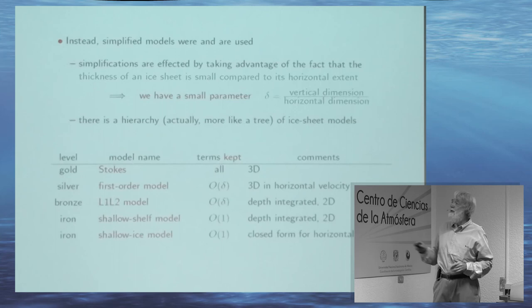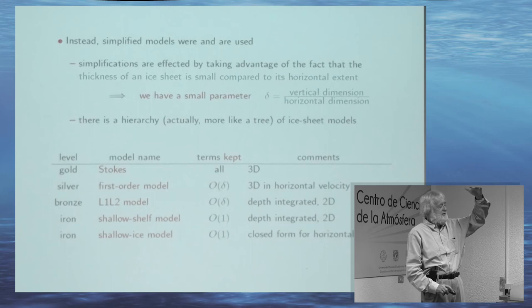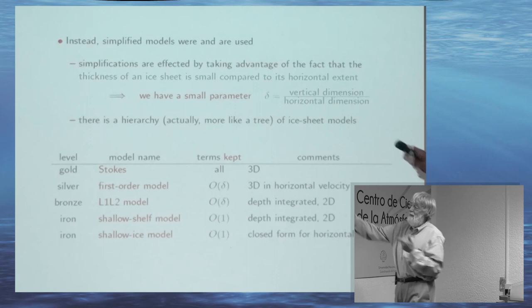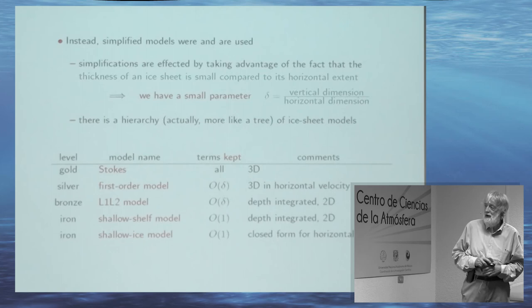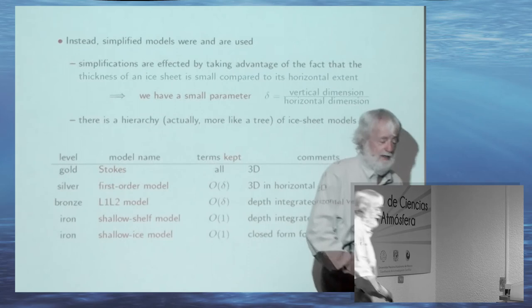The simplification is due to the fact that even though ice thickness can be several kilometers in Greenland and Antarctica, the horizontal extent of the ice sheets is thousands of kilometers. So you have a small parameter: the vertical extent divided by the horizontal extent. Once you have a small parameter, you can figure out what terms to throw out and simplify your model. The Stokes is fully 3D, but then just like airlines have a hierarchy of frequent flyer programs, we have a hierarchy of models.